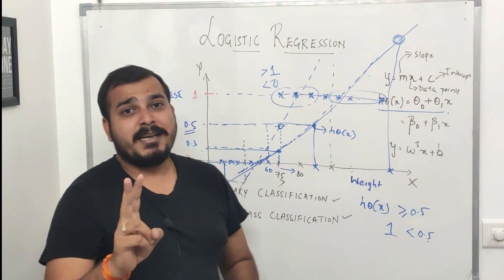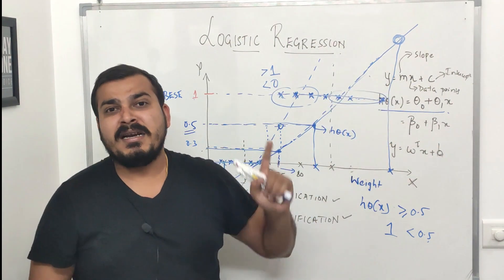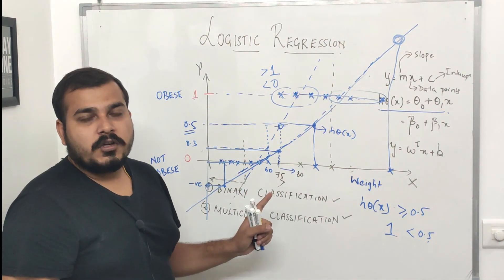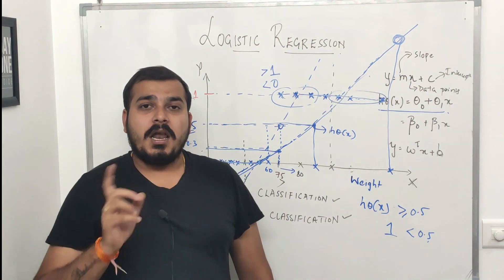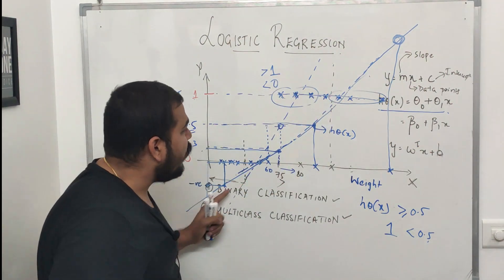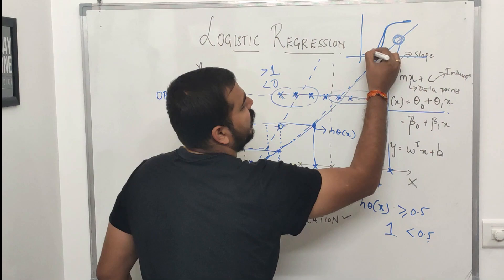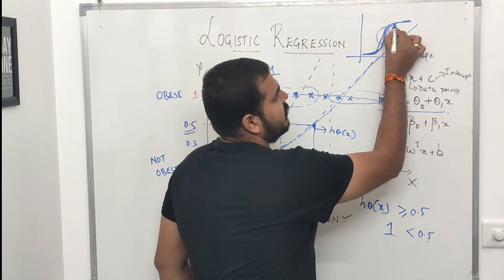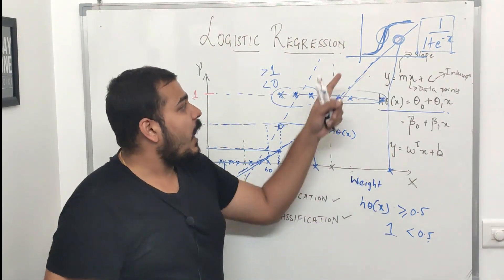Two reasons why linear regression should not be used for binary classification: first, outliers completely deviate the best-fit line; second, outputs can be greater than 1 or less than 0. To solve this we use logistic regression, which uses a sigmoid function that squashes the straight line into a curve. Logistic regression creates a curve represented by 1 / (1 + e^(-x)), also called the sigmoid function, which is also used in deep learning.